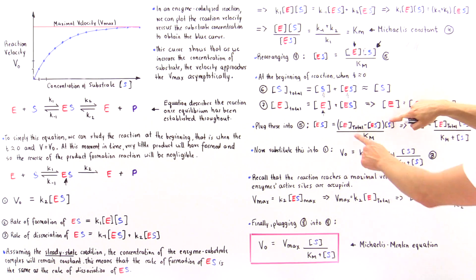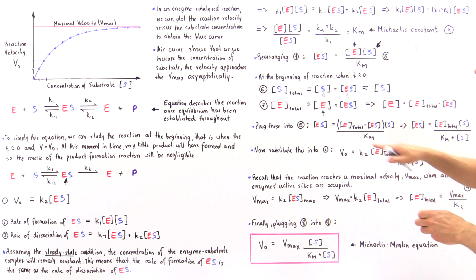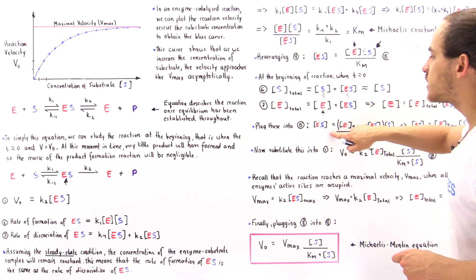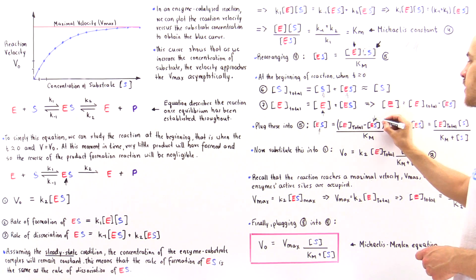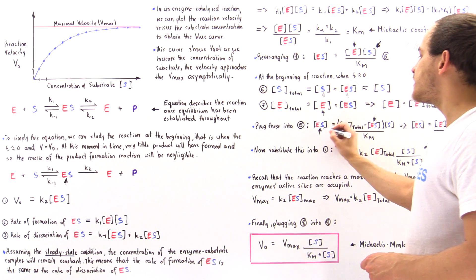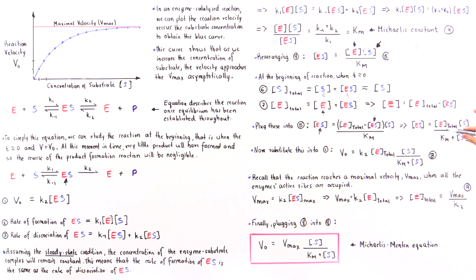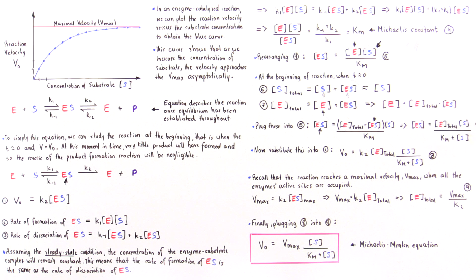We take this equation, multiply it out, and solve for the enzyme-substrate complex concentration, because now we have this term appearing on the left side and this term appearing on the right side. So the enzyme-substrate concentration is equal to the total enzyme found inside the mixture multiplied by the substrate concentration, divided by Km — this constant we define here — plus the concentration of the substrate.